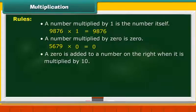A 0 is added to a number on the right when it is multiplied by 10. 4358 multiplied by 10 is equal to 43580.